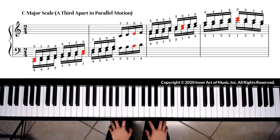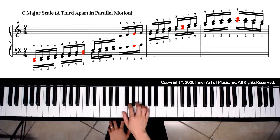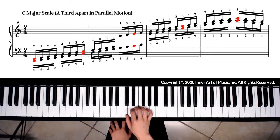For regular octave apart scale, our right hand uses 1, 2, 3 to play C, D, E. For a third apart scale, we use the same third finger on right hand to start on note E.